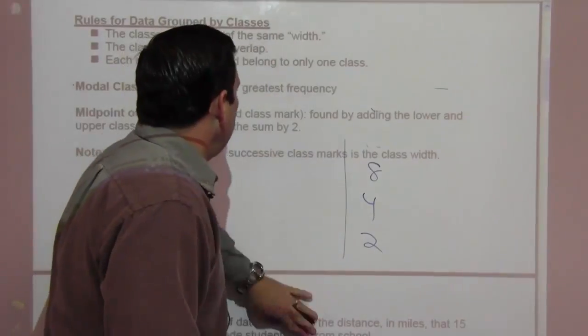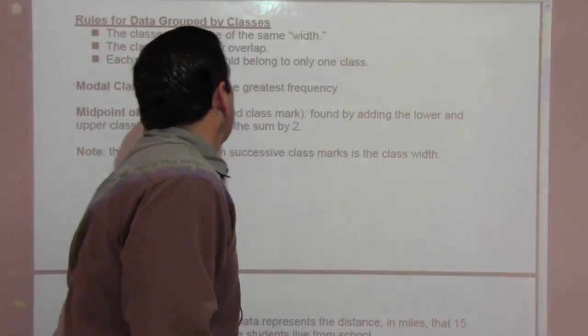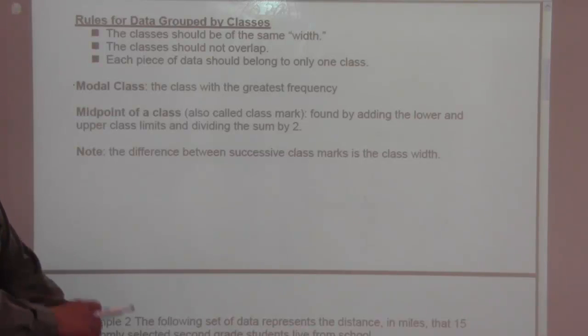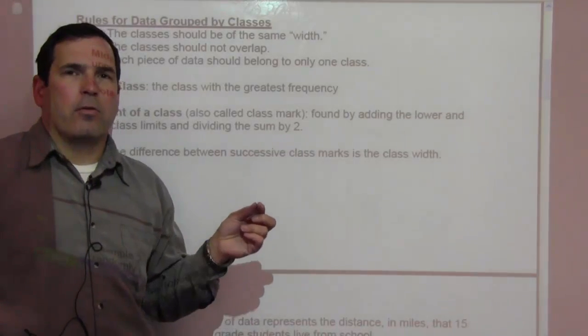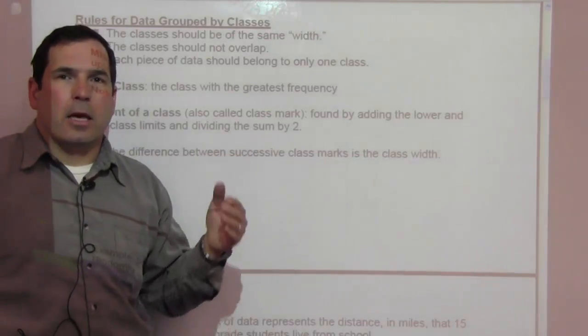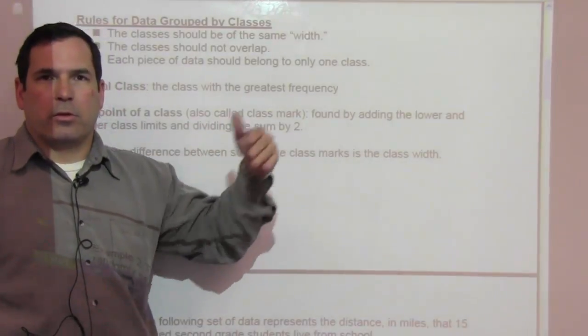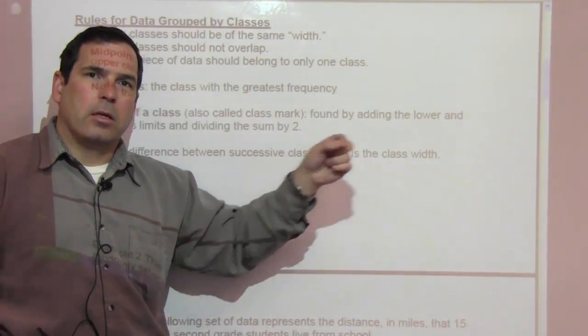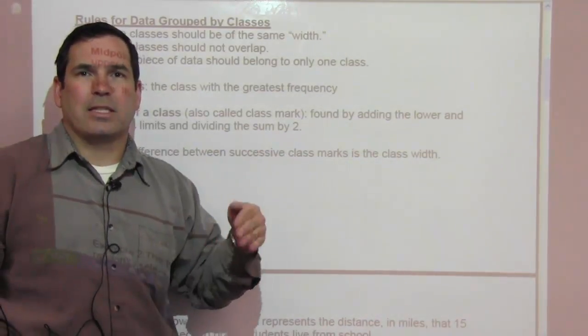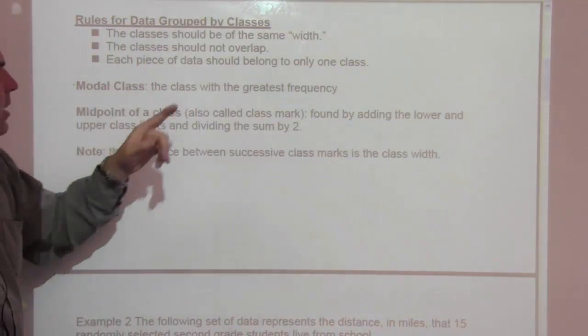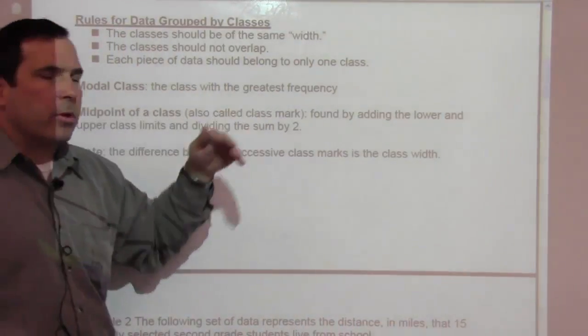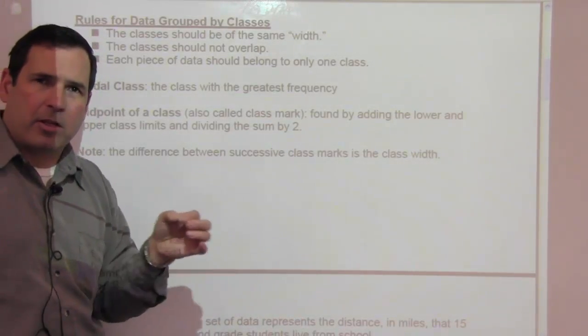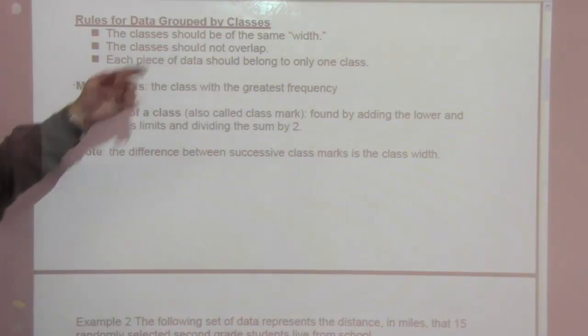Rules for data grouped by classes. The classes should be of the same width. When we say classes, we're talking about groups of data. If you're going to do a group of data, like from one to two, three to four, five to six, they're all the same width. Or from zero to five, six to ten, and so on. Classes should not overlap, so you wouldn't go zero to five, then five to six, because five would fall into both categories.